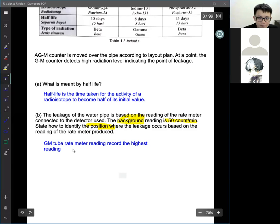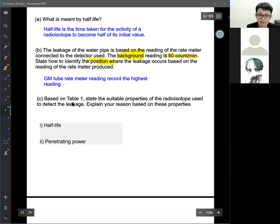The leakage of the water pipe is based on the reading of the rate meter connected to the detector. This is the detector. The background reading is 50 counts per minute. State how to identify the position where the leakage occurs based on the reading of the rate meter produced. Basically, that is we call it the background reading. Background reading means even though there's no leakage isotope, there's a certain radio activity, very very small amount, maybe from the sun, maybe from the rock, or from the gravity of the earth. Means something will produce the radiation but very very little.